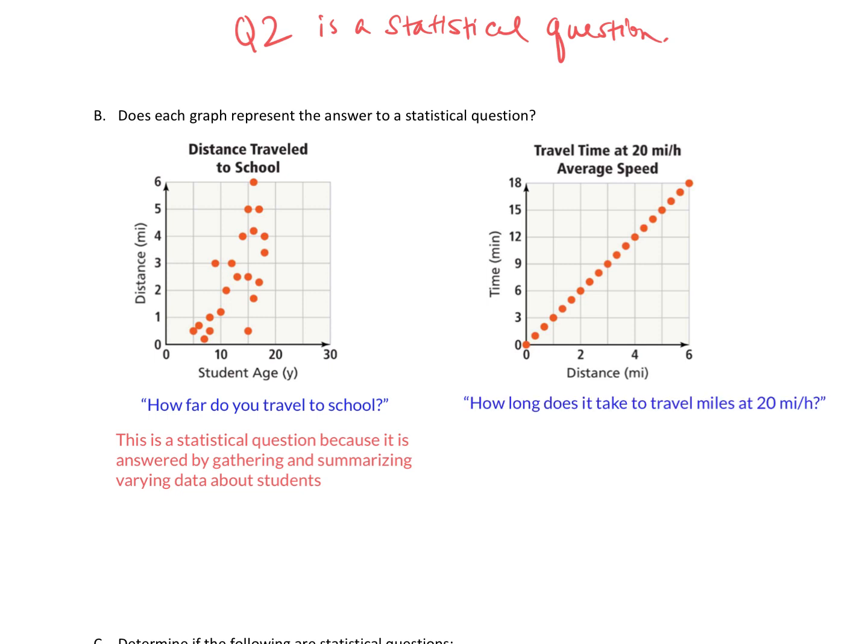So in this situation, you know, what data would we be collecting? Would we collect many pieces of data? So that's not what's going on here. There is a predetermined answer. The answer varies predictably with x, so it is not a statistical question.